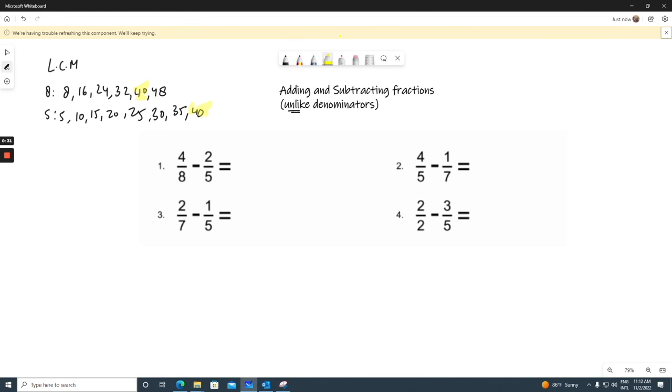So the new denominator will be 40 and 40. How many times 8 gives you 40? Times 5. 4 times 5 is 20. How many times 5 gives you 40? Times 8. 2 times 8 is 16. 20 minus 16 is 4 over 40, which can be simplified by the table of 4: 1 over 10. So it's 1 over 10 in the end. If you have any questions, you can write in comments.